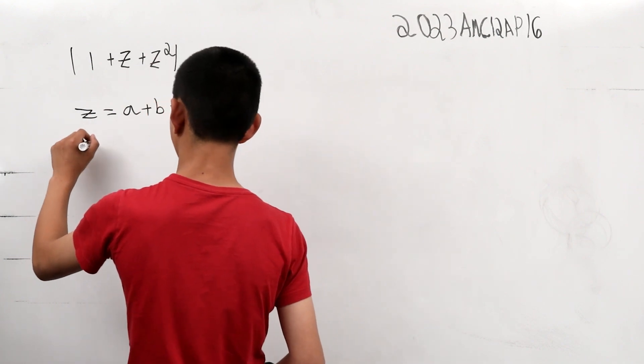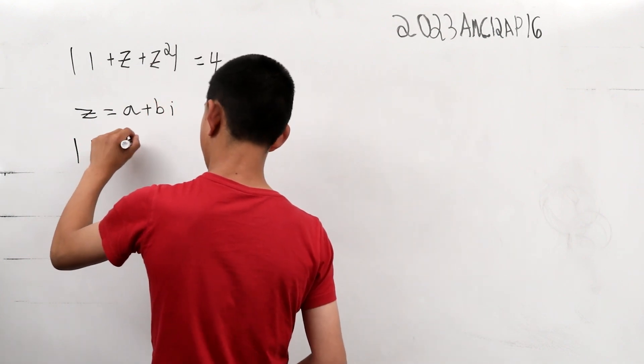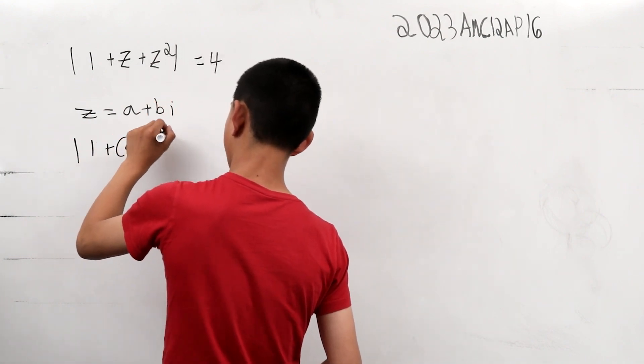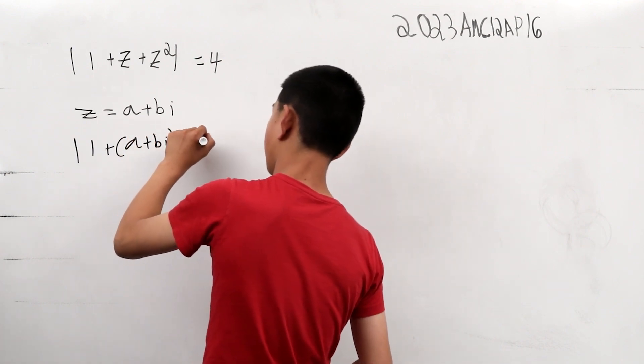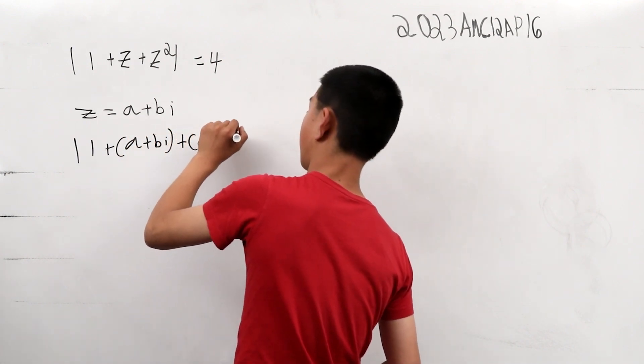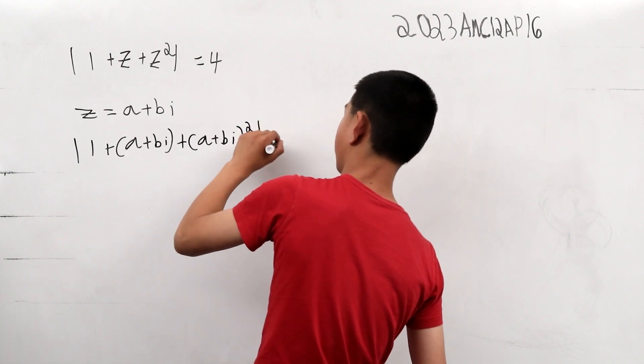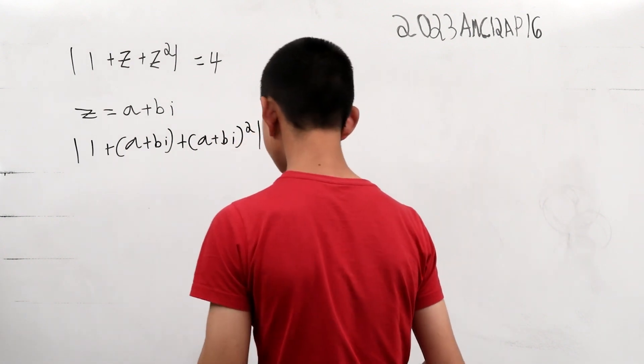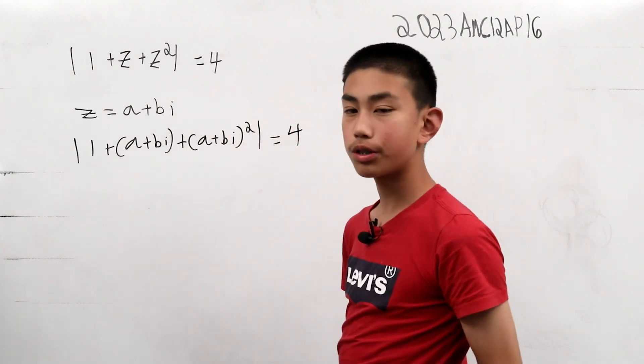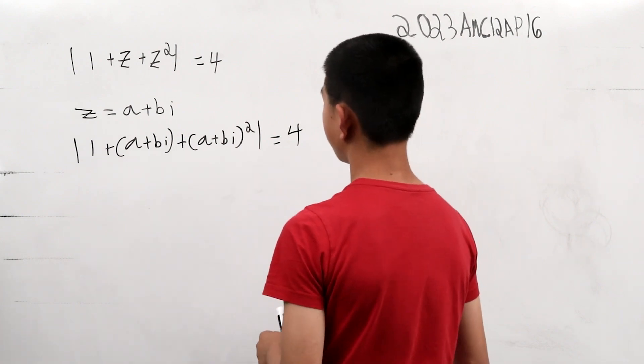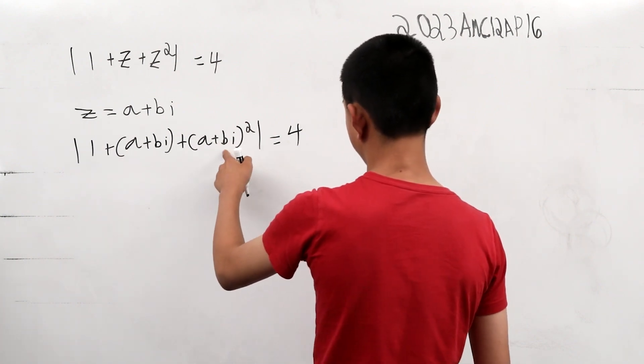So this is the absolute value of one plus a plus bi plus a plus bi squared is four. Now, what we can do is we can rewrite this equation by squaring a plus bi,